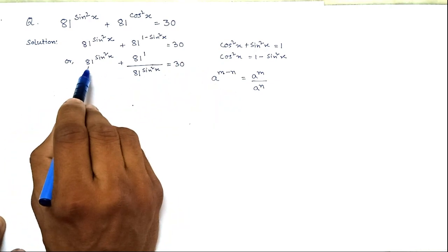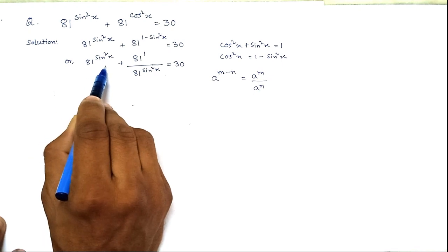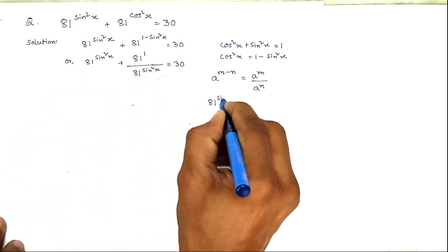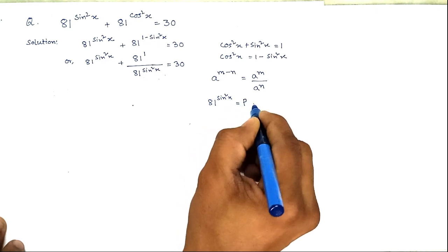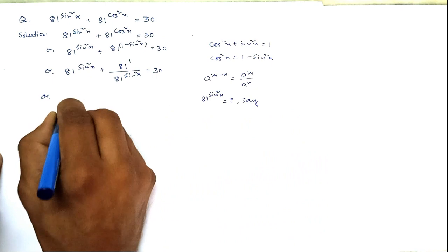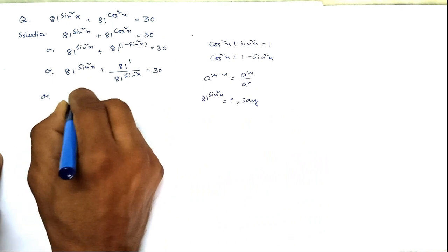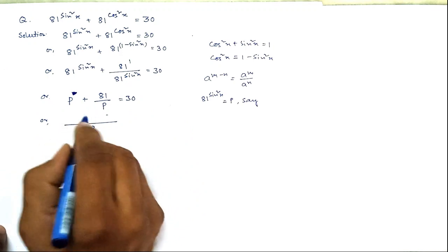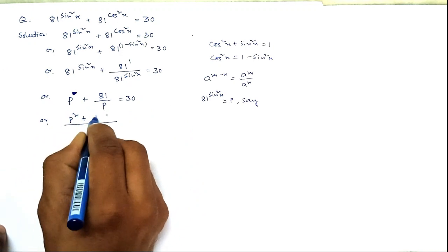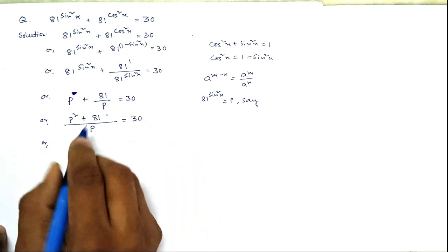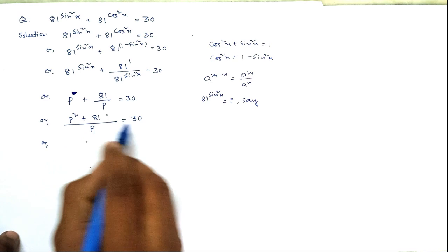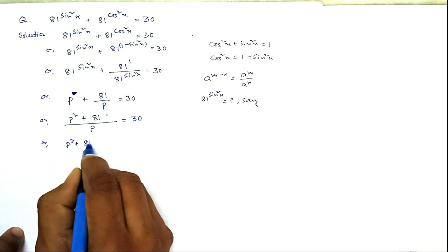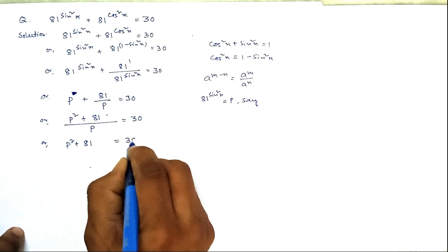Notice that 81 to the power sin²x appears in both terms. So we let p equal 81 to the power sin²x. Taking the LCM of p, we get p squared plus 81 equals 30p. Multiplying both sides by p, the p in the denominator cancels, giving p squared plus 81 equals 30p.